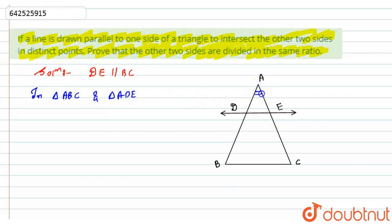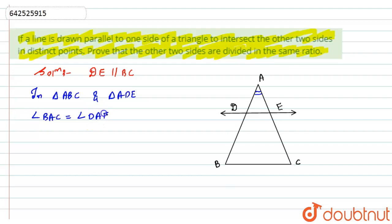If you look at the figure, angle A is common in both triangles. Hence, angle BAC is equal to angle DAE, because it is the same angle common to both triangles.